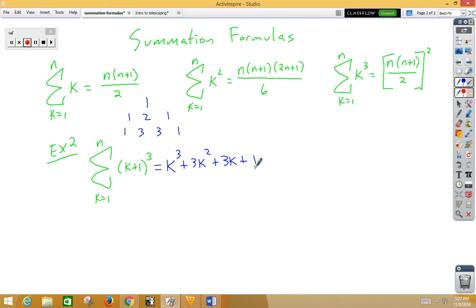And now, we want to create a closed form formula that will help us answer this question. Well, k cubed, we know, is n times n plus 1 over 2 squared plus 3 times k squared, we know, is n times n plus 1 times 2n plus 1 over 6.